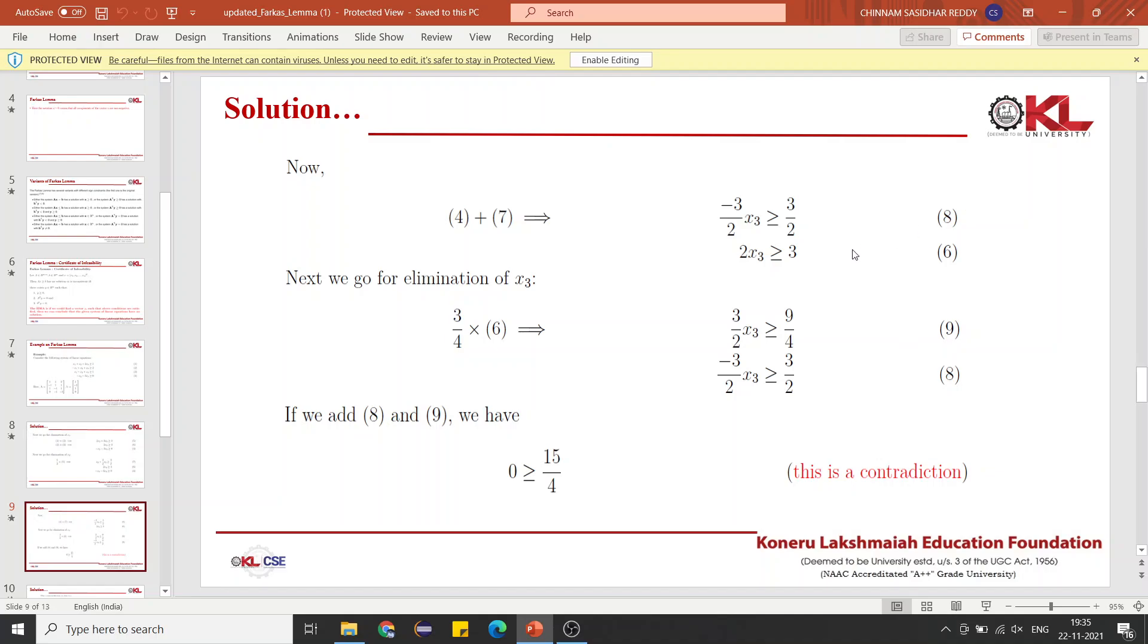Now, you are left only with variable x3. How will you eliminate this x3? Simply multiply equation 6 with 3/4 which gives you equation 9, that is 3/2 x3 greater than or equal to 9/4. Now, when you add equations 9 and 8, you will get 0 greater than or equal to 15/4, which is not true. This is a contradiction.